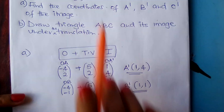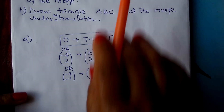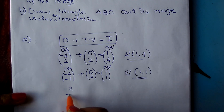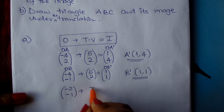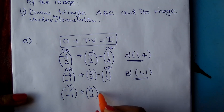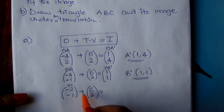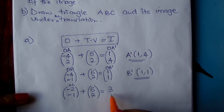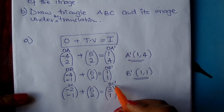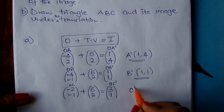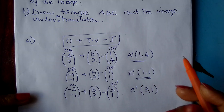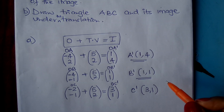We go to C. C is at (-2, -1). Write it as OC = (-2, -1). You add the translation vector (5, -2). Negative 2 plus 5 gives you 3, and negative 1 plus 2 gives you 1. This is OC', the position vector of C'. Therefore C' is at (3, 1). These are the three points of the image triangle.